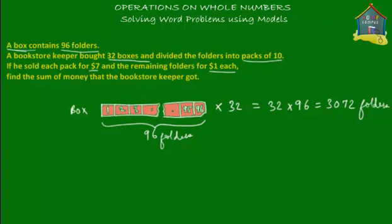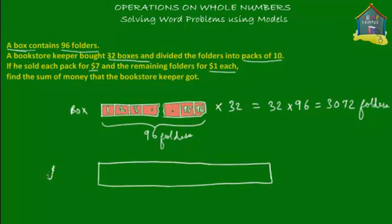The bookstore keeper bought 32 boxes which contained altogether 3072 folders, and then he divided the folders into packs of 10. So he made bundles or packets containing 10 folders each.